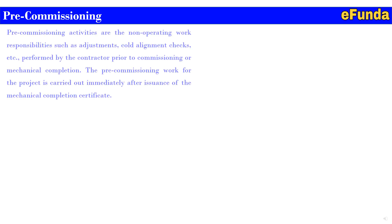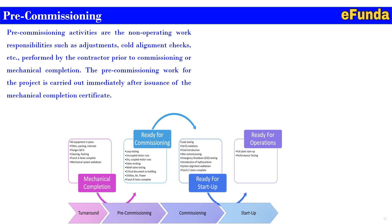Pre-commissioning activities are non-operating work responsibilities such as adjustment, hold, alignment checks, etc., performed by the contractor prior to commissioning or mechanical completion. The pre-commissioning work is carried out immediately after the issuance of the mechanical completion certificate. One can refer to the figure showing turnaround: pre-commissioning, commissioning, and startup. Under mechanical completion, all equipment is in place — filter packaging, internal flanges, cleaning, flushing, punch items complete, and mechanical system walkdown. Moving to ready for commissioning: loop testing, uncoupled motor run, dry-coupled motor run, valve stroking, relief valve testing, and critical documents like utilities, air, and power.